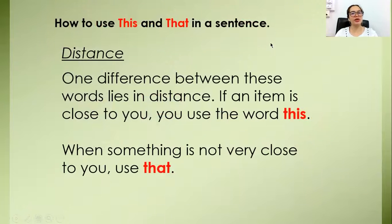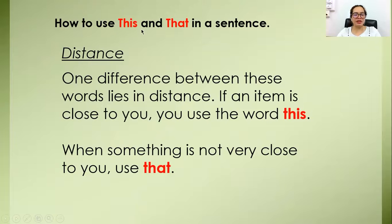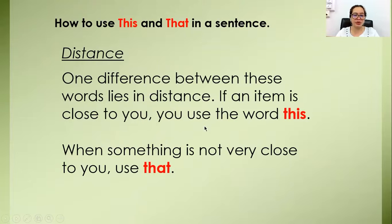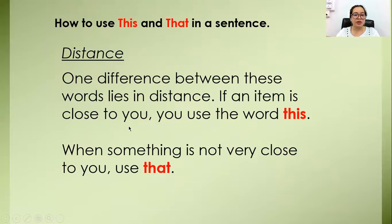This morning we are going to learn about how to use 'this' and 'that' in a sentence. One difference between these words lies in distance. If an item is close to you, you use the word 'this.' When something is not very close to you, you use 'that.'